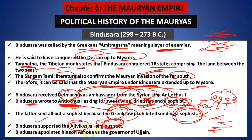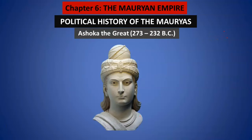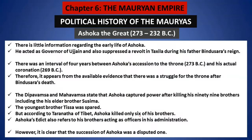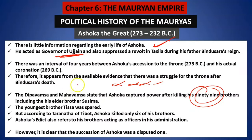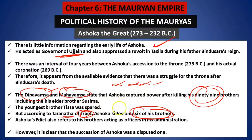Bindusara supported the Ajivikas religion sect. His son was a governor of Ujjain, but after Bindusara's death, Ashoka becomes the king. Very little information is available about Ashoka's early life. Earlier he was a governor of Ujjain. It is said that he killed all his brothers — 99 brothers — and then became the king. This is mentioned in Dipvamsa and Mahavamsa, which are Buddhist texts. But according to Taranatha, a Tibetan text, he killed only six of his brothers. What is important is that it was not easy for Ashoka to become king and he had to fight with his brothers.